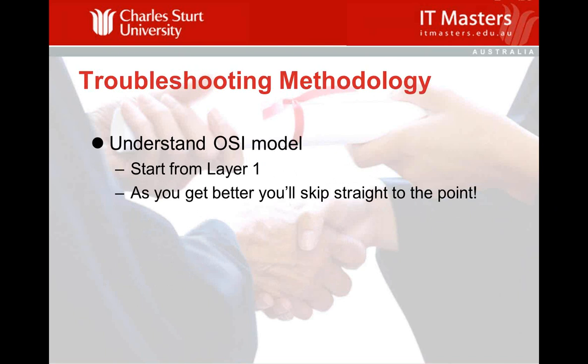If you're only starting in troubleshooting or haven't got a lot of experience, then using the OSI as a troubleshooting reference model is really useful, particularly starting from Layer 1. As you get better and gain more experience, you'll get a gut feel for what things are and jump straight into Layer 3 or Layer 2. But as a starting point, it's a really good reference model to use. Make sure you understand the OSI model — revisit the first week's lectures. As you're going through the labs, try to assimilate the commands and things I'm doing with the OSI model and see how they interact together.